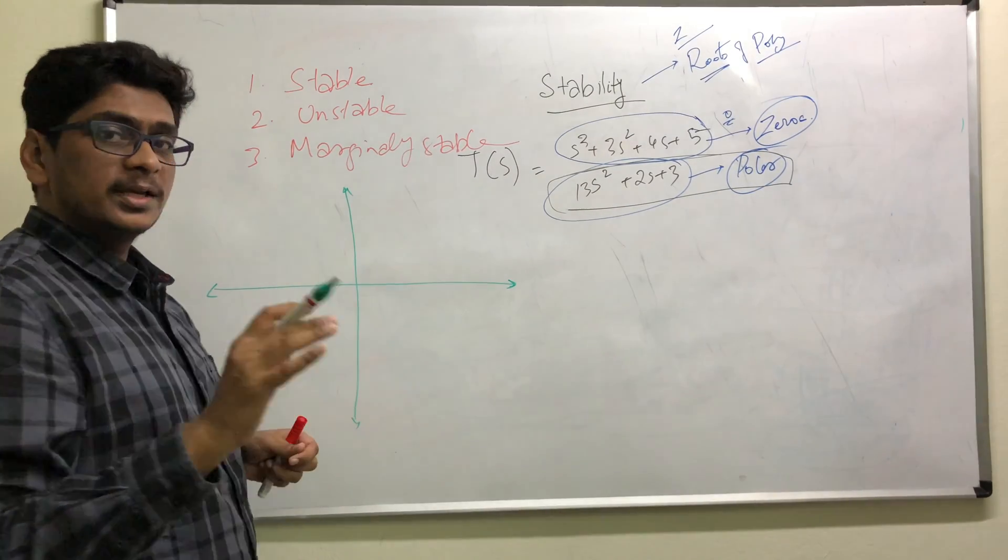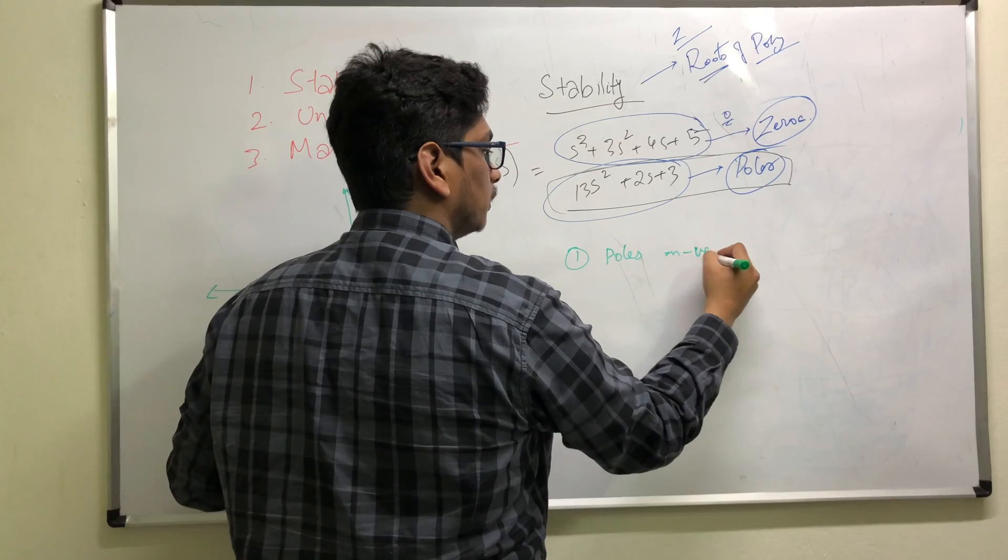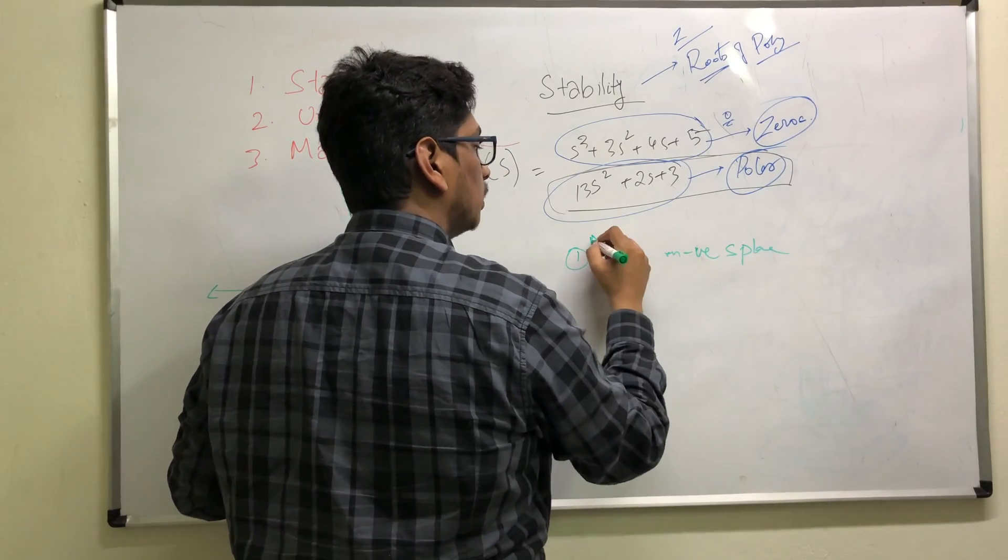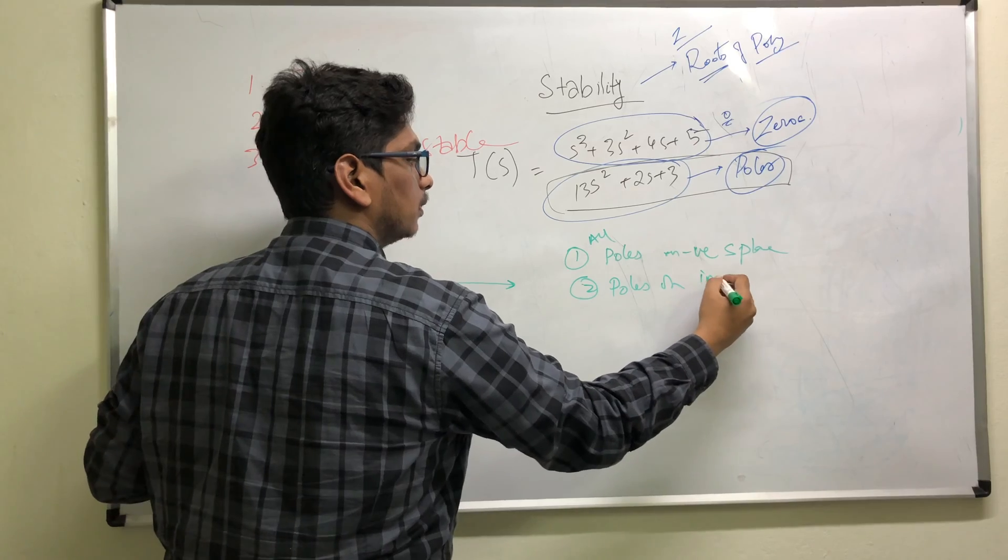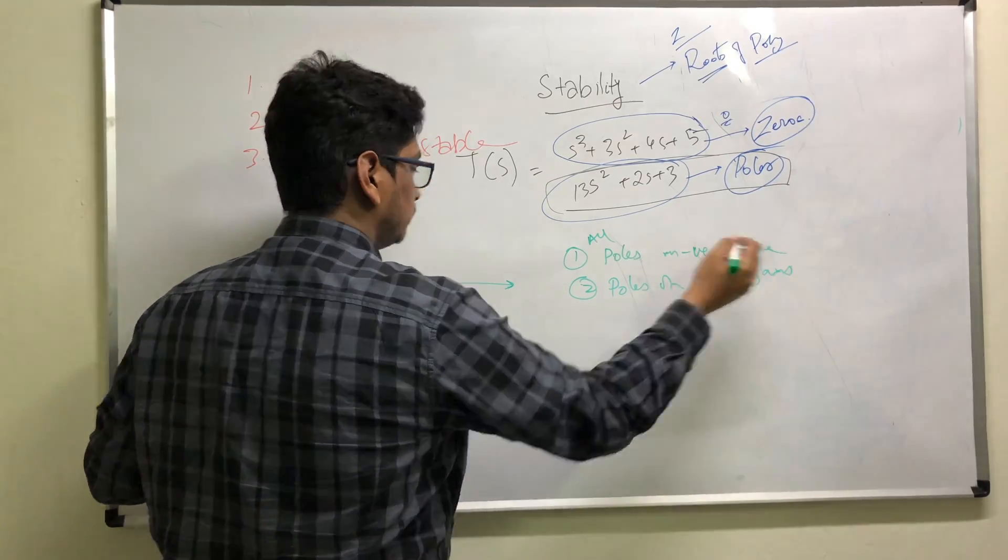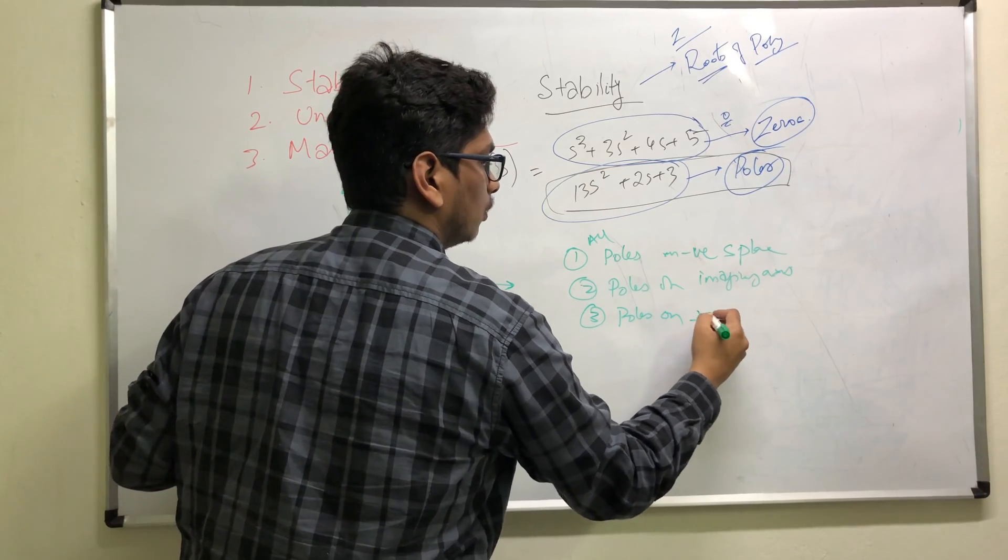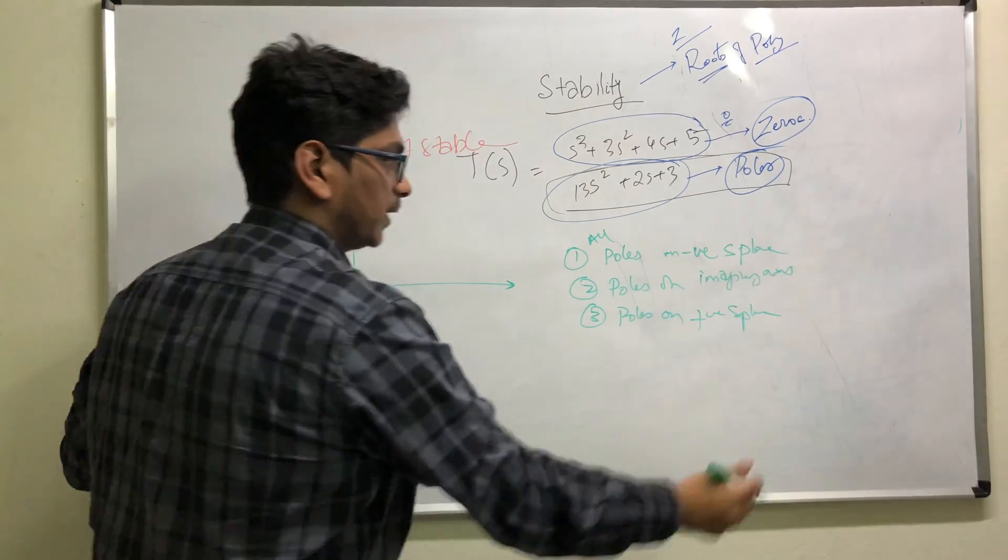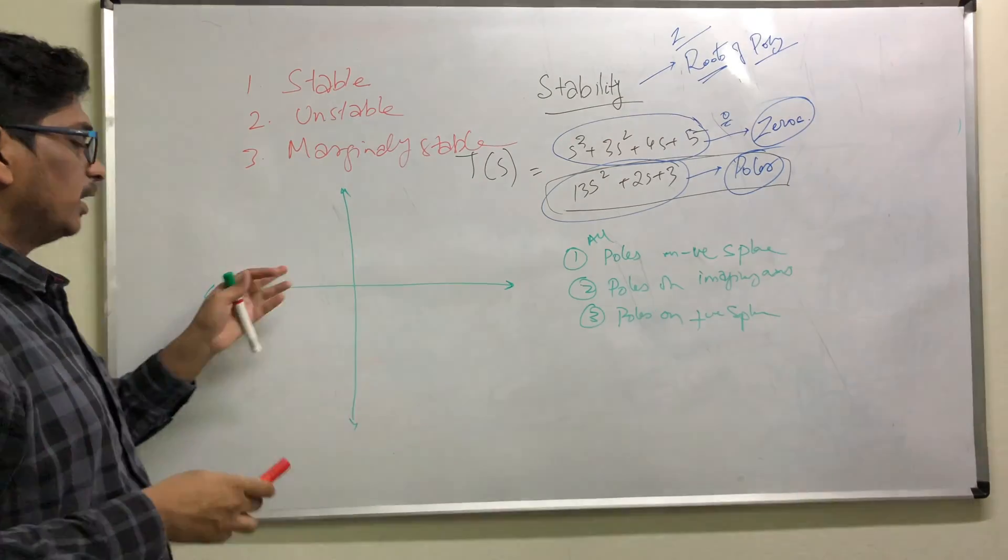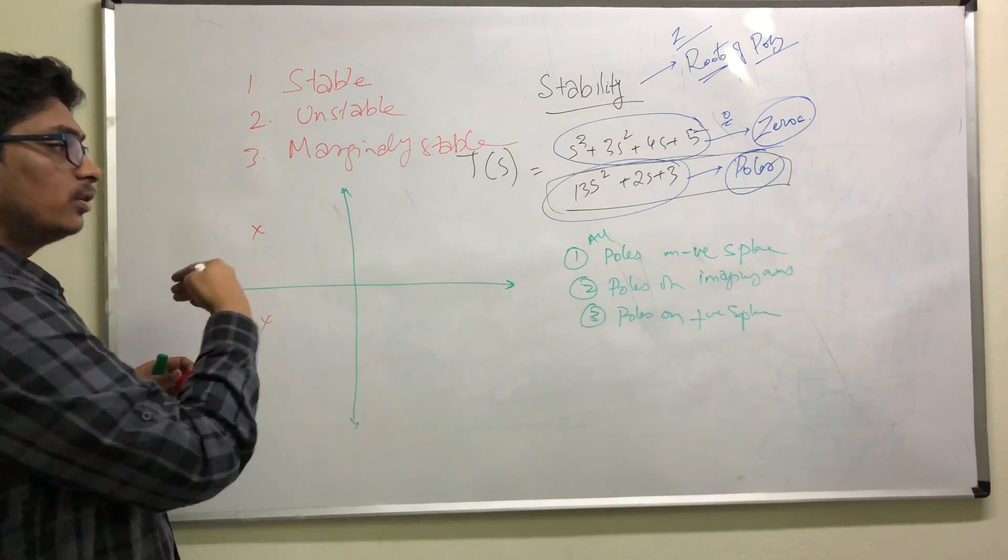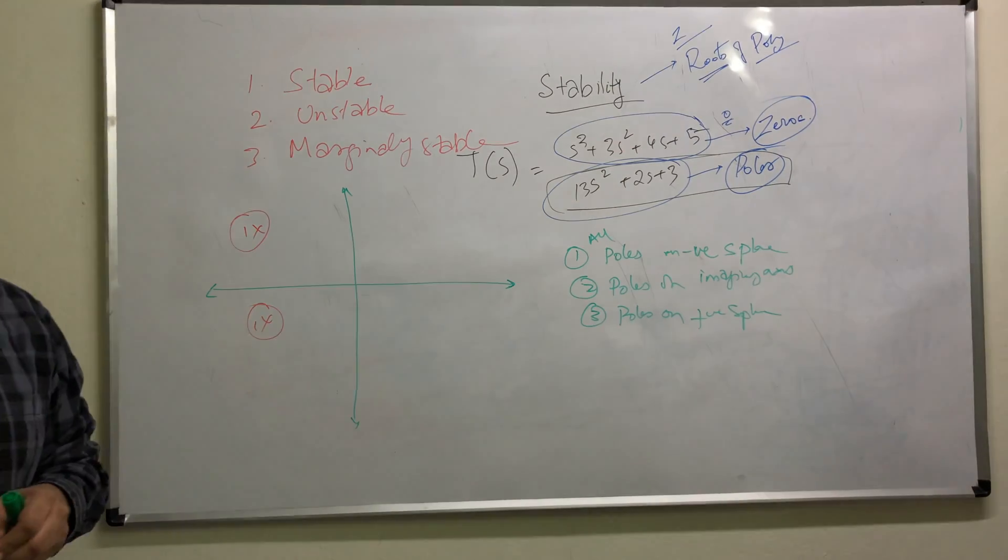The concept is very simple. Depending upon where the poles lie: poles on negative s-plane, or poles on imaginary axis, which is your y-axis. If all the poles lie on the negative half of the s-plane, all the poles, then the system is said to be stable.